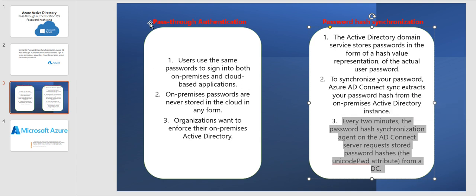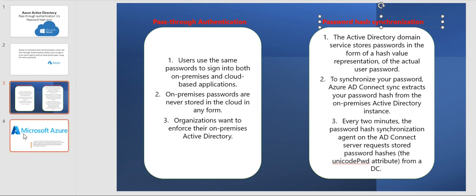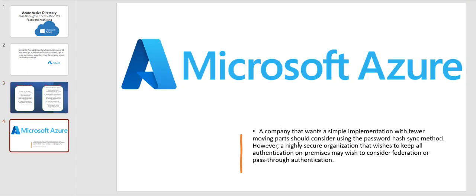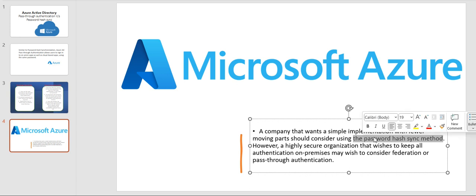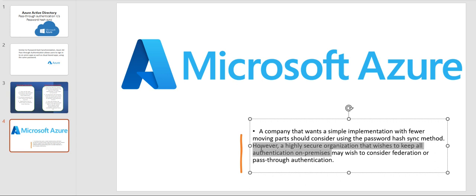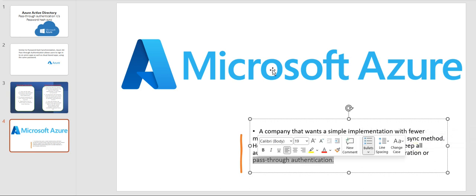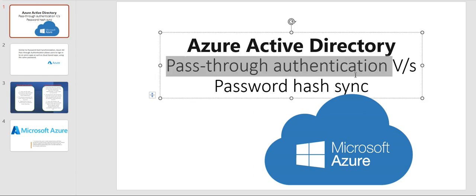So if your organization wants simple implementation with fewer moving parts and fewer servers, you can use password hash sync. Even in the Azure AZ-500 exam, if the question asks about implementing synchronization with fewer servers, you should select password hash synchronization. However, for highly secure organizations that wish to keep all authentication on-premise with no authentication in the cloud, you should use either federation services or pass-through authentication.